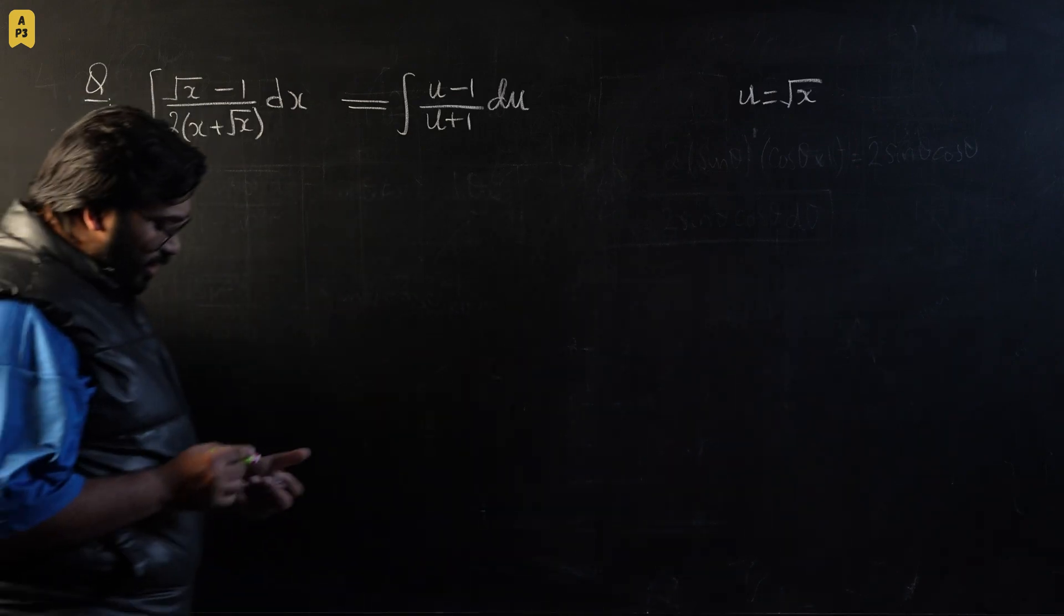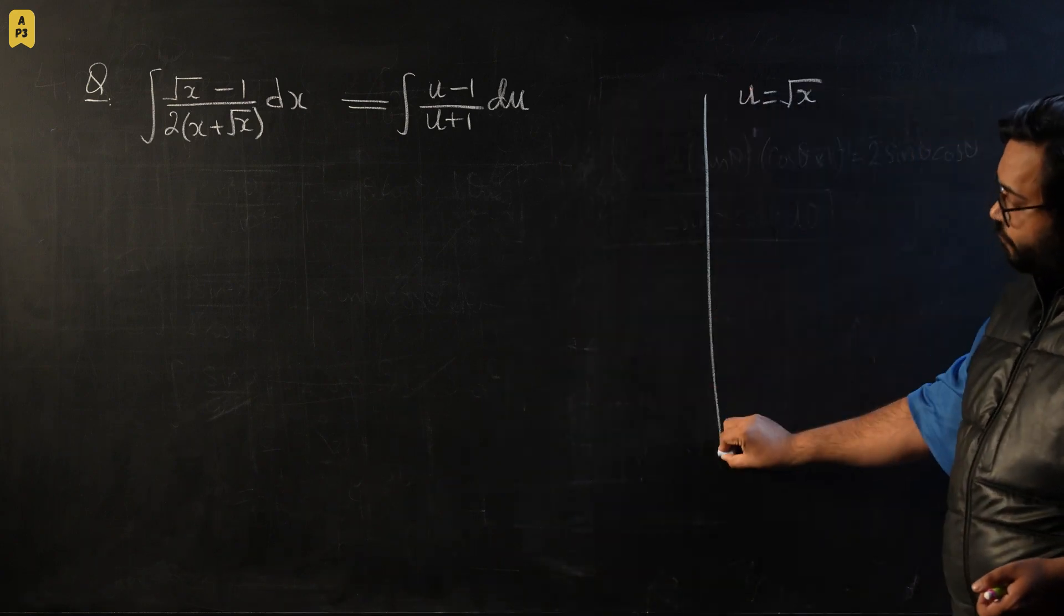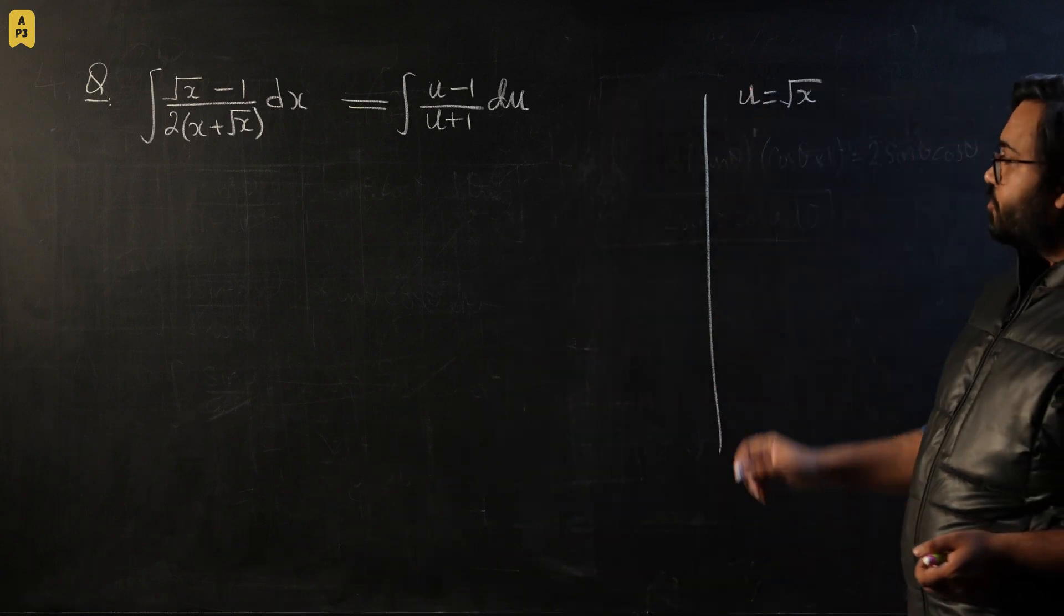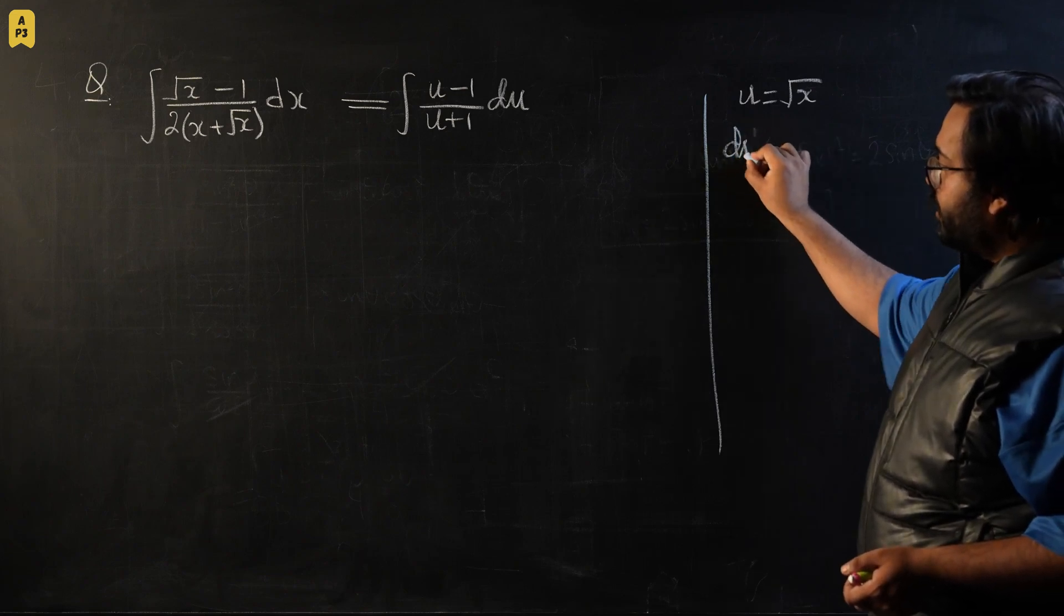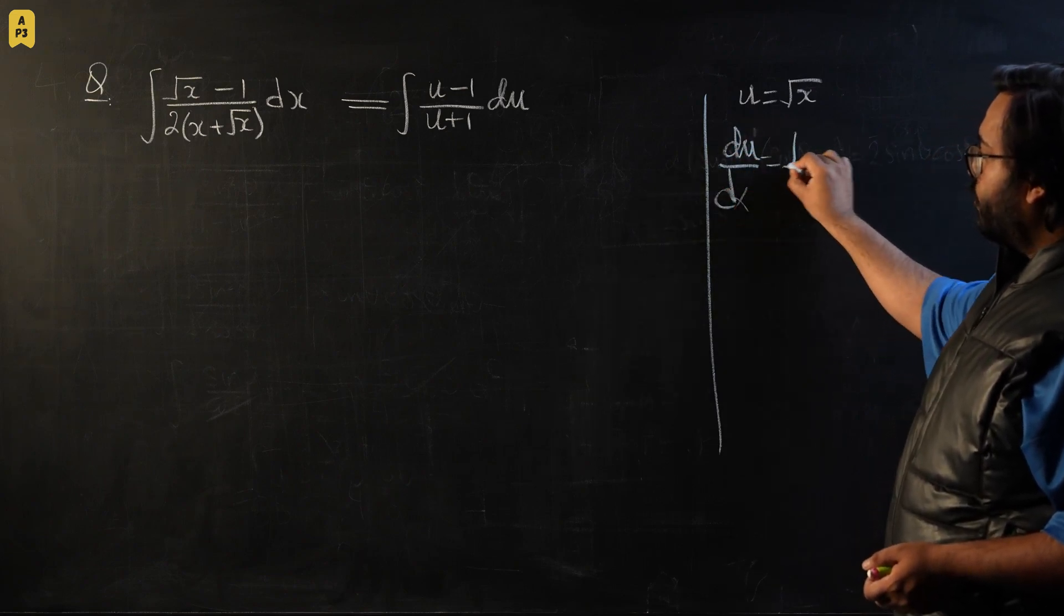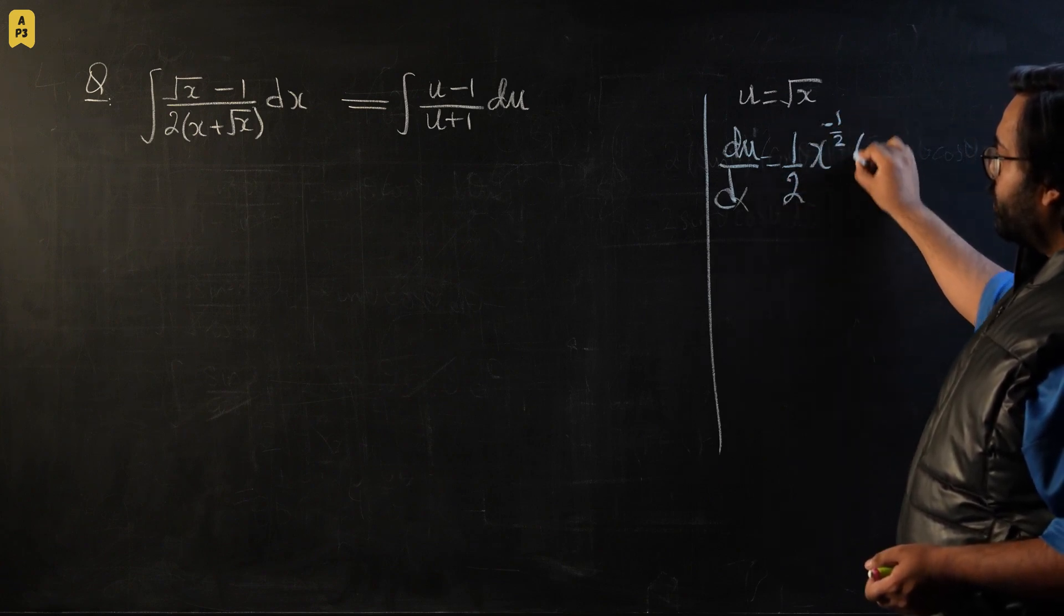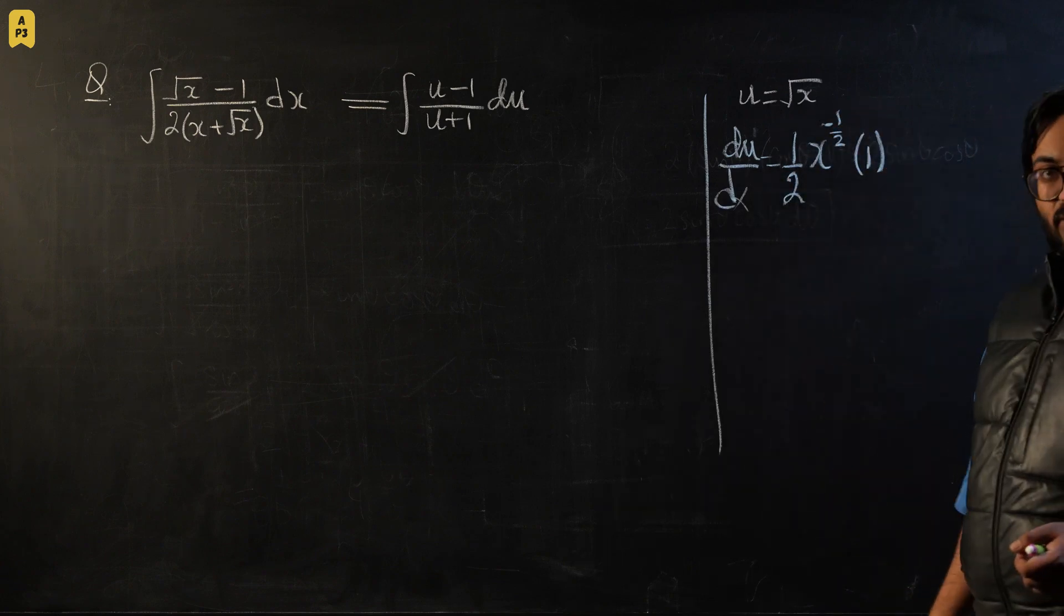So let's start. The very first step that you should do for integration by substitution is of course by differentiating the substitution. So you're going to make du by dx and that would be 1 over 2 times power would get 1 subtracted times differentiation of x that would be 1.